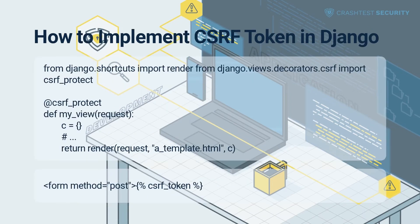Django offers a CSRF middleware tag out of the box, making it easy to enable protection against CSRF attacks. The sample workflow depicts how CSRF protection can be implemented within the framework shown here. In Django, CSRF middleware is enabled by default. If the developer overrides this setting, they should declare Django middleware CSRF view middleware before any view to enable CSRF token validation.